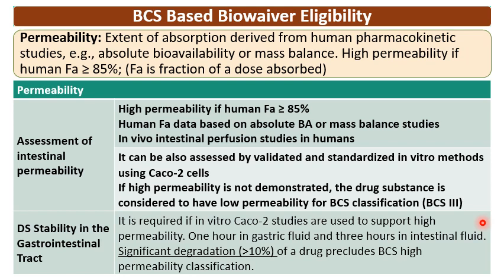Coming to drug substance stability in the GI tract — the drug substance should be stable in the GI environment. Stability is checked in gastric fluid for 1 hour and in intestinal fluid for 3 hours. The drug substance is considered stable if there is no significant degradation, that is less than 10%. This is required because if the drug product gets degraded in the GI tract, its bioavailability will be decreased.